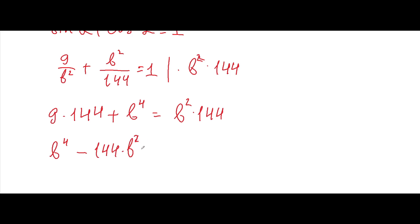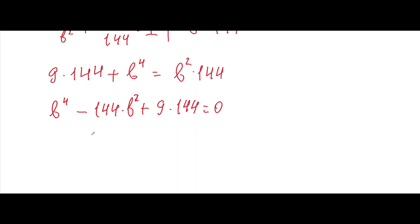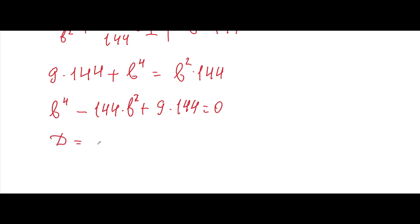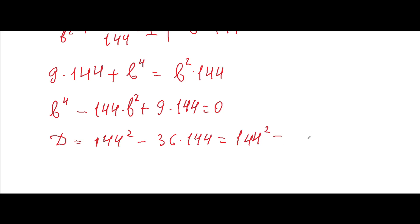We can use the discriminant here: discriminant equals 144 squared minus 36 times 144. It seems very difficult at first but it's not. Here 36 is the square of six, and 144 is the square of twelve, so twelve times six gives us 72, and this is all squared.